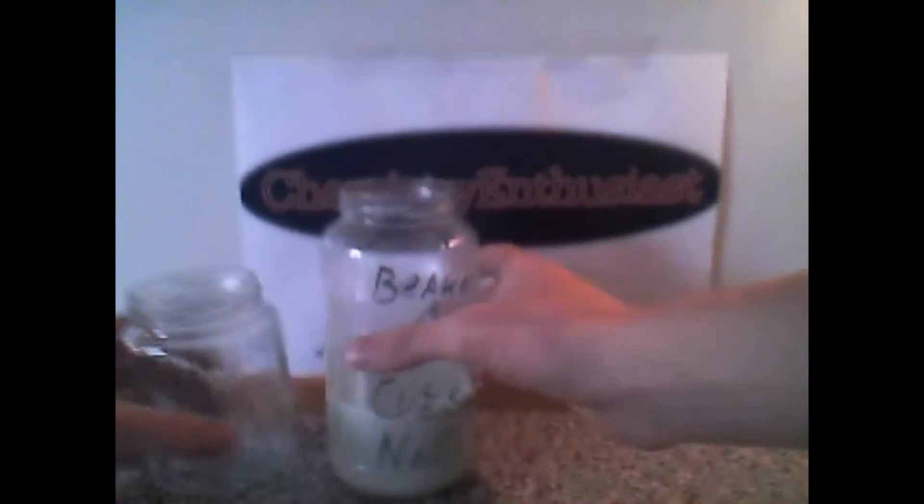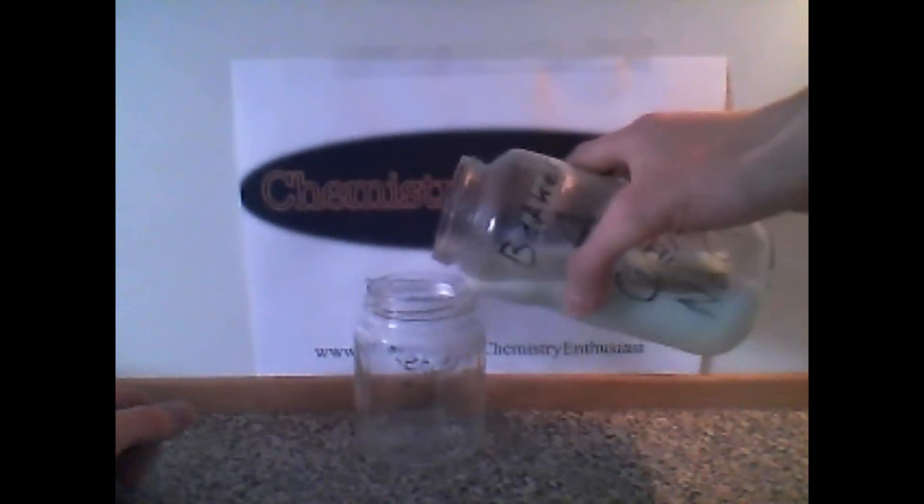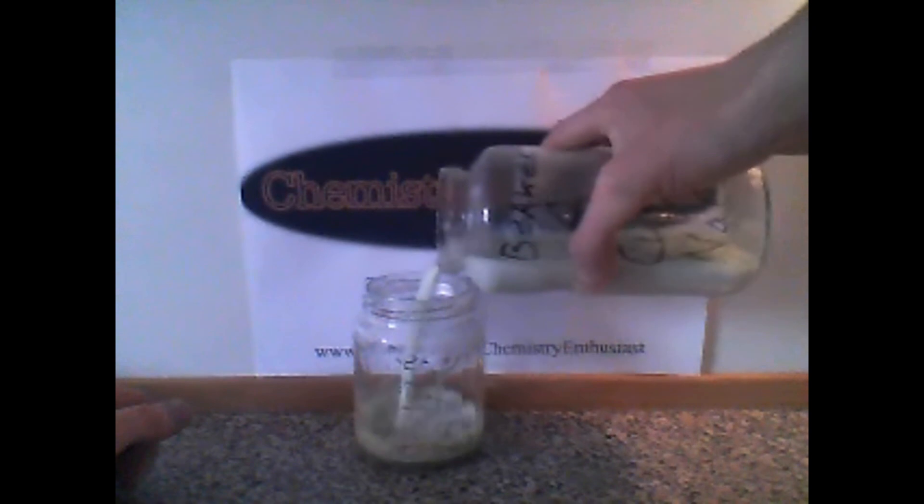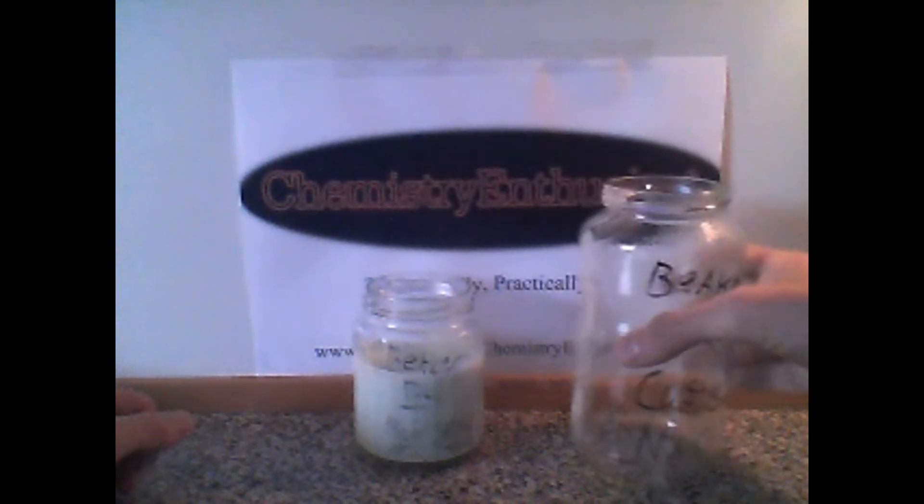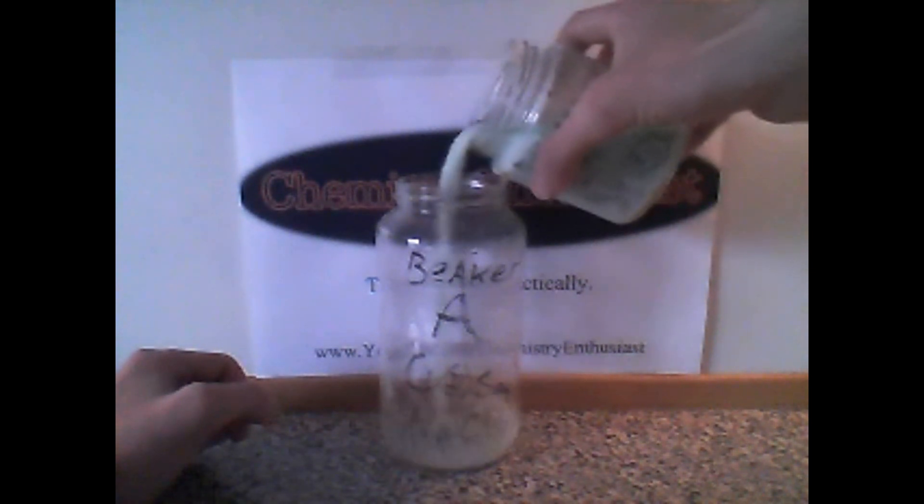And then pour it back into beaker B to get all of the chemicals to react. As you can see the brown color, there was some chemical left in the beaker, so this was a good idea. Now pour it back into beaker A. This will also mix the chemicals completely.